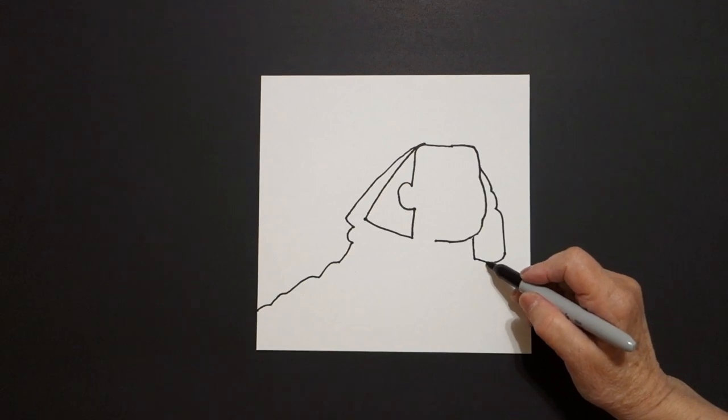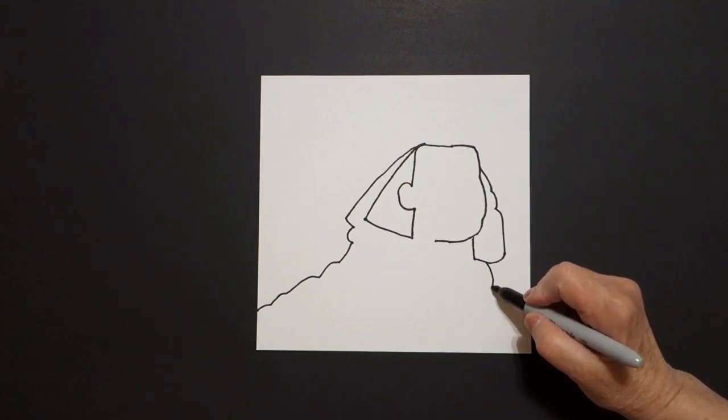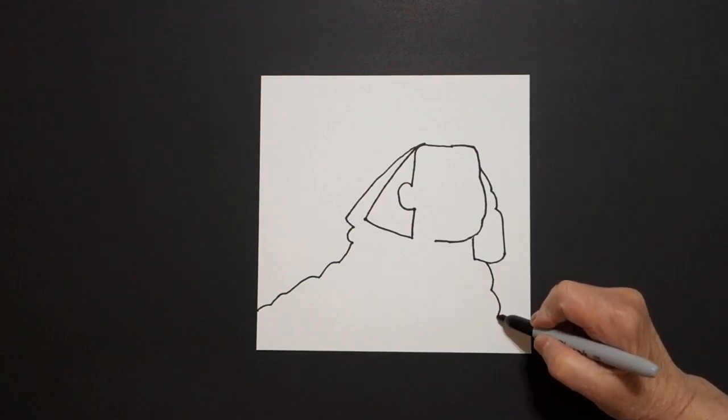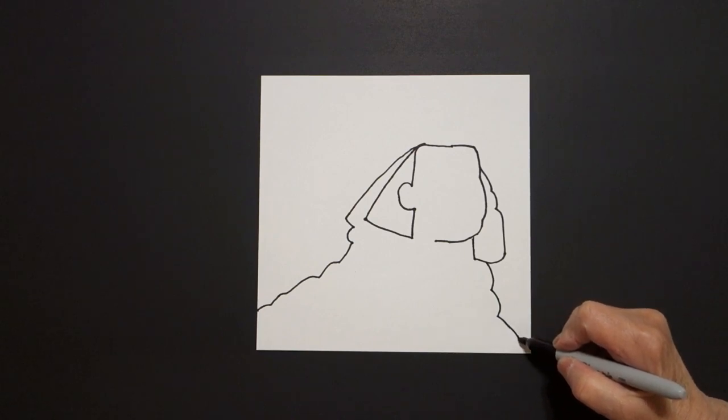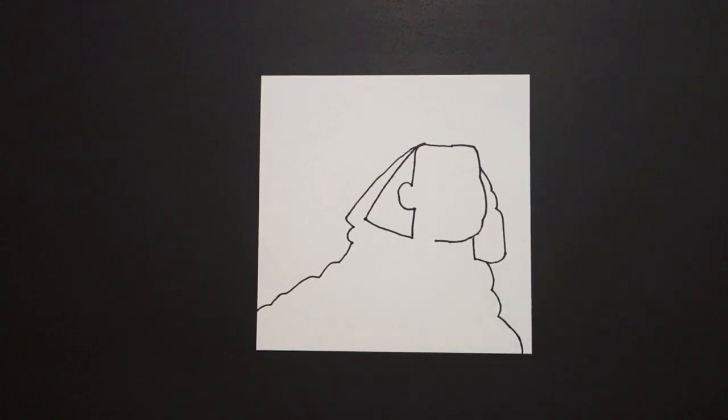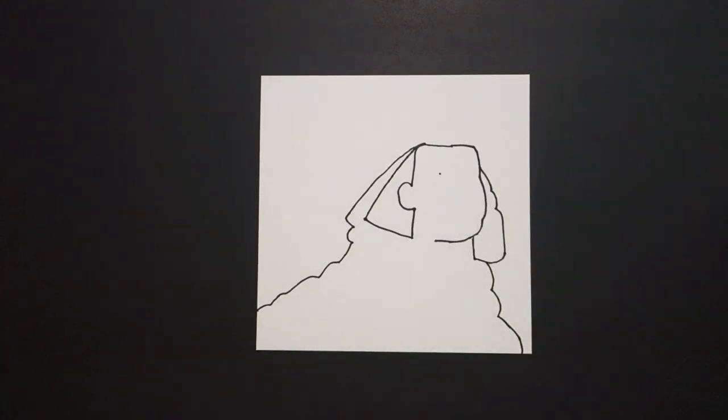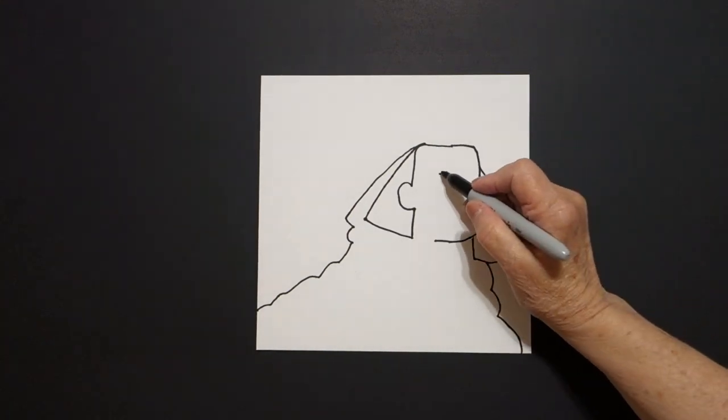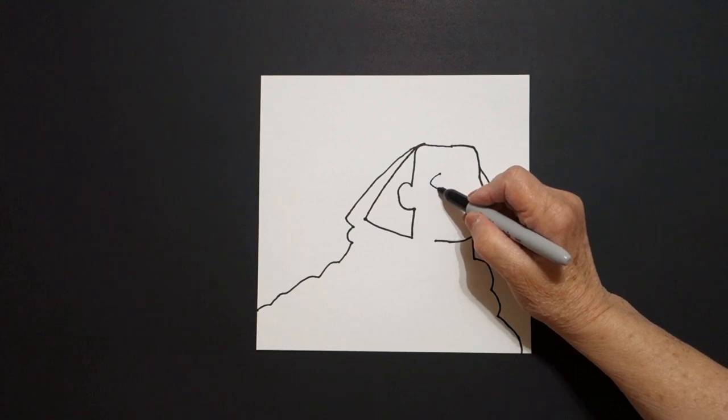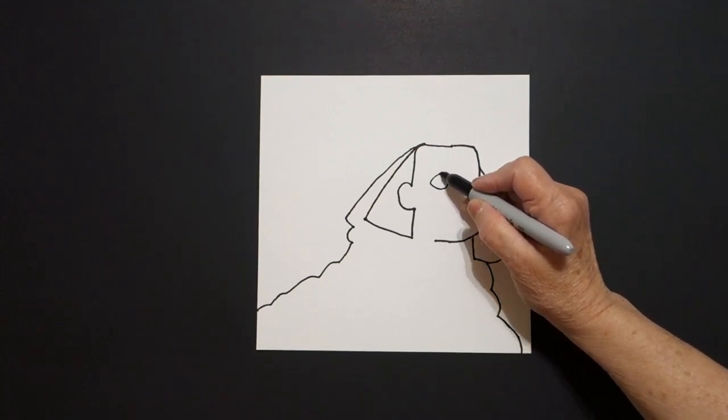Right at this point I'm going to draw a curve line in, curve line down, curve line off the page. I come inside and right about here I'm going to put a dot and I'm going to draw a curve line down, over, up, and connect.